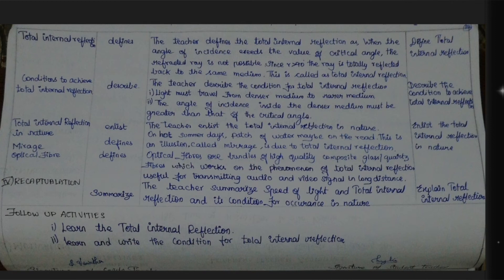Total internal reflection in nature: the teacher enlists examples. On a hot summer day, a patch of water may appear on the road — this illusion is called a mirage and is due to total internal reflection.